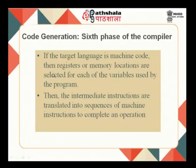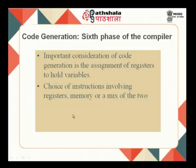The last phase of the compiler is the code generation phase. If the target language is machine code, then registers or memory locations are selected for each of the variables used by the program. The intermediate instructions are translated into sequences of machine instructions to complete an operation. Considerations include the assignment of registers to hold variables, and the choice of instructions involving registers and memory or a mix of the two.